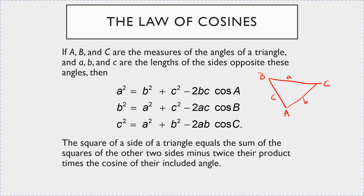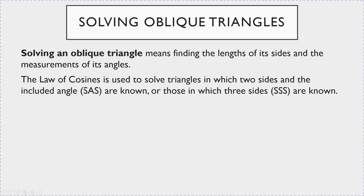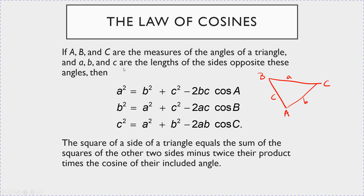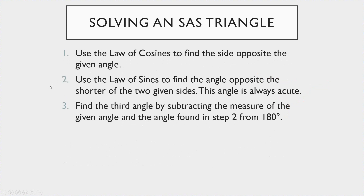For the side-angle-side case, there are three steps. Step one: use the law of cosines to find the side opposite the given angle. Step two: use the law of sines to find the angle opposite the shorter of the given two sides — this angle is always acute. Step three: find the third angle by subtracting the given angle and the angle found in step two from 180 degrees.